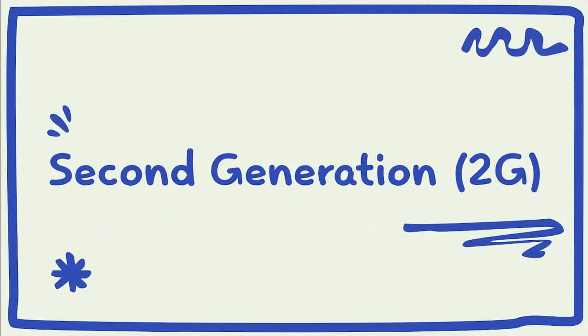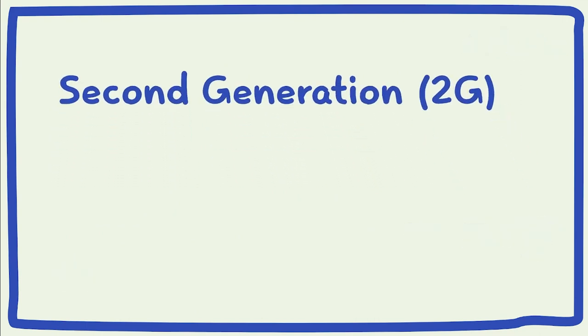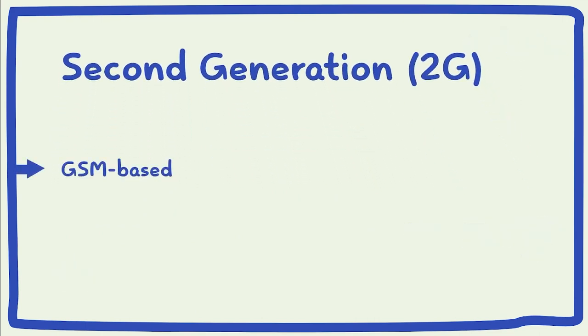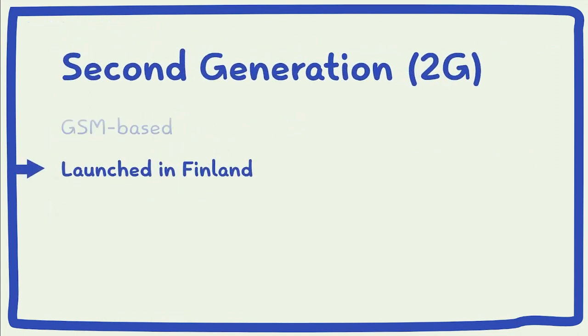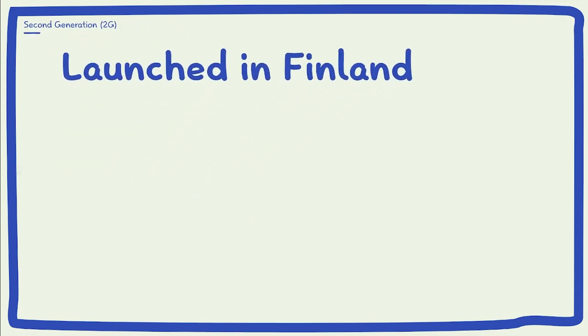2G, or second generation wireless telephone technology, is based on the global system for mobile communication. This technology introduced various network services such as text messaging, picture messaging, and MMS. 2G was first launched in Finland in 1991.